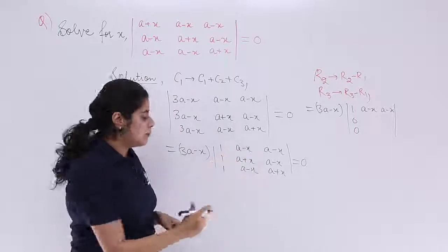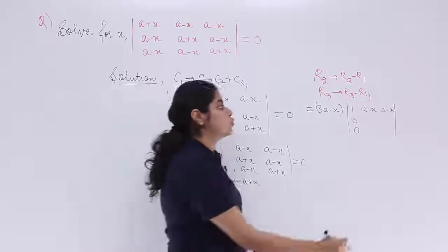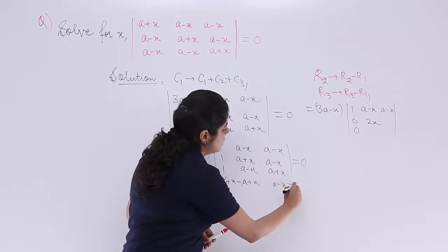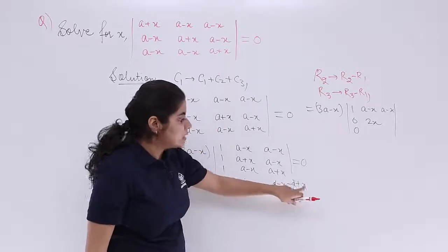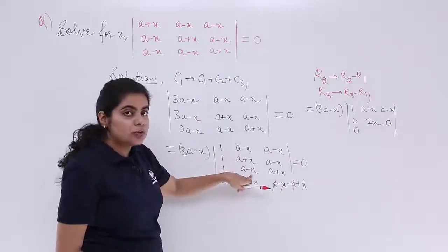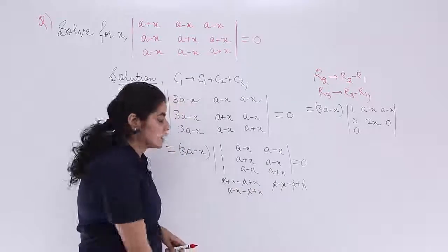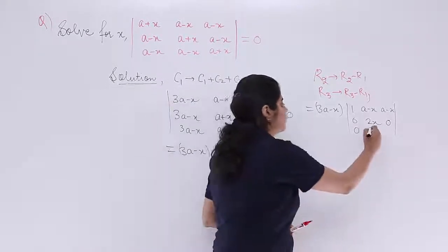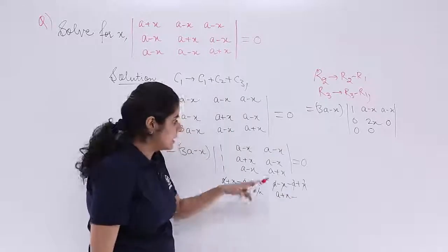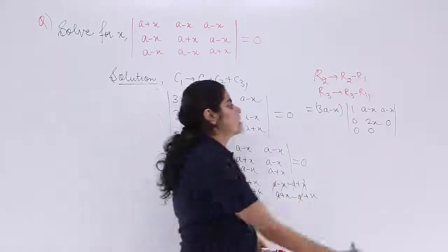For R2, the third entry: (a + x) − (a − x) — the a's cancel, giving 2x. For the next entry in R2: (a − x) − (a − x) — a's and x's both cancel, giving 0. For R3: (a − x) − (a + x) — a's cancel, x and −x cancel, giving 0. The last entry of R3: (a + x) − (a − x) = 2x. So row 3 is now 0, 0, 2x.